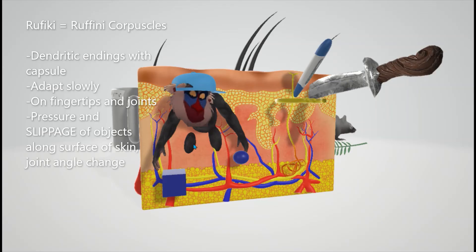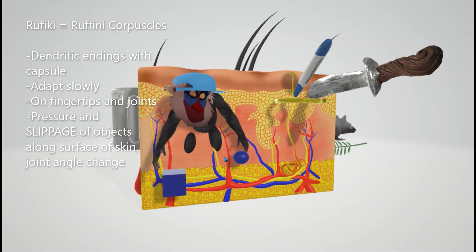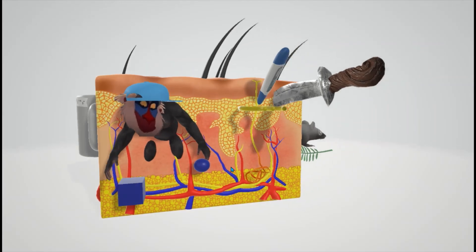It adapts slowly. Rafiki looks like they're moving slowly over here, and it's involved in slippage of objects along surface of skin. So you see he's dropping objects over here. Also required for pressure and sensation and joint angle change.